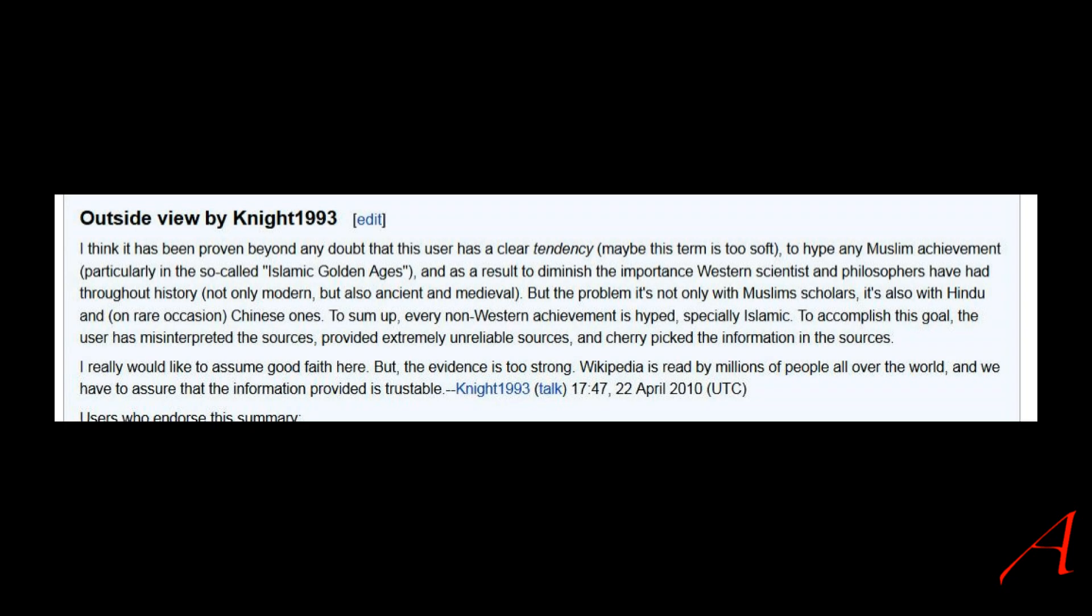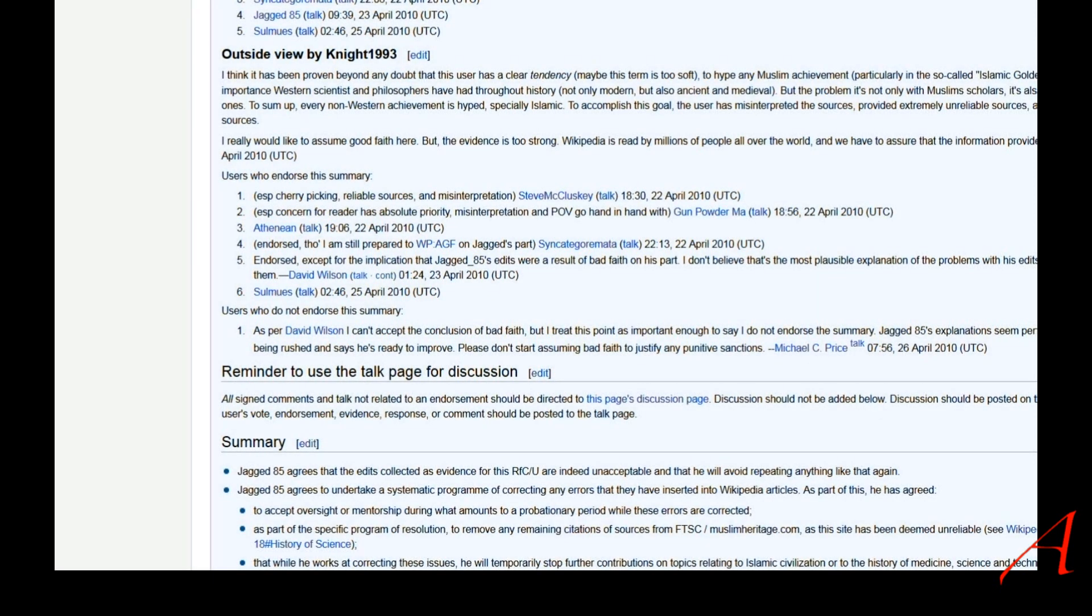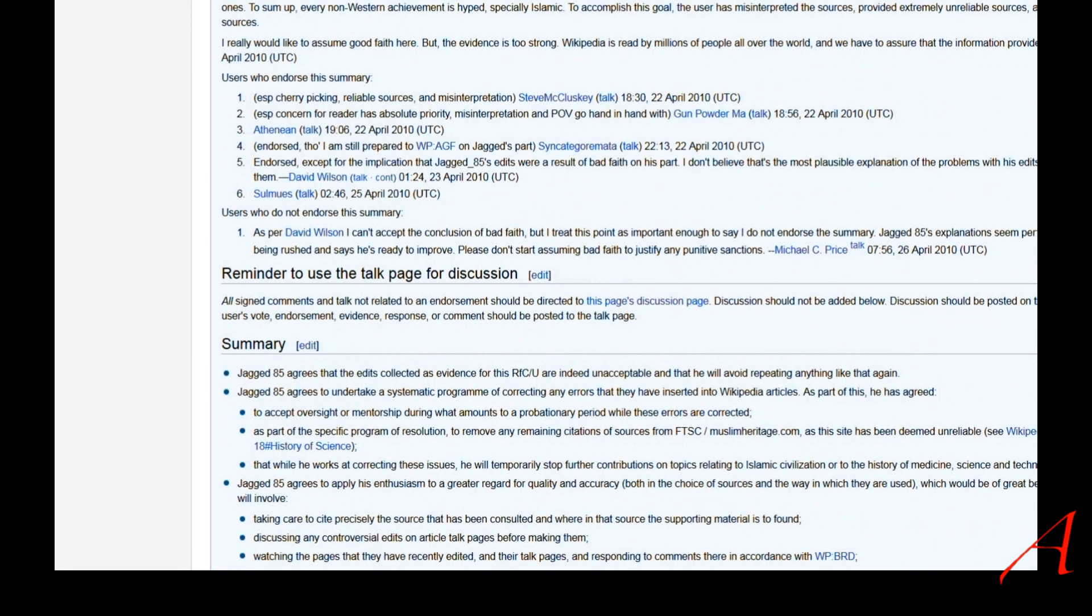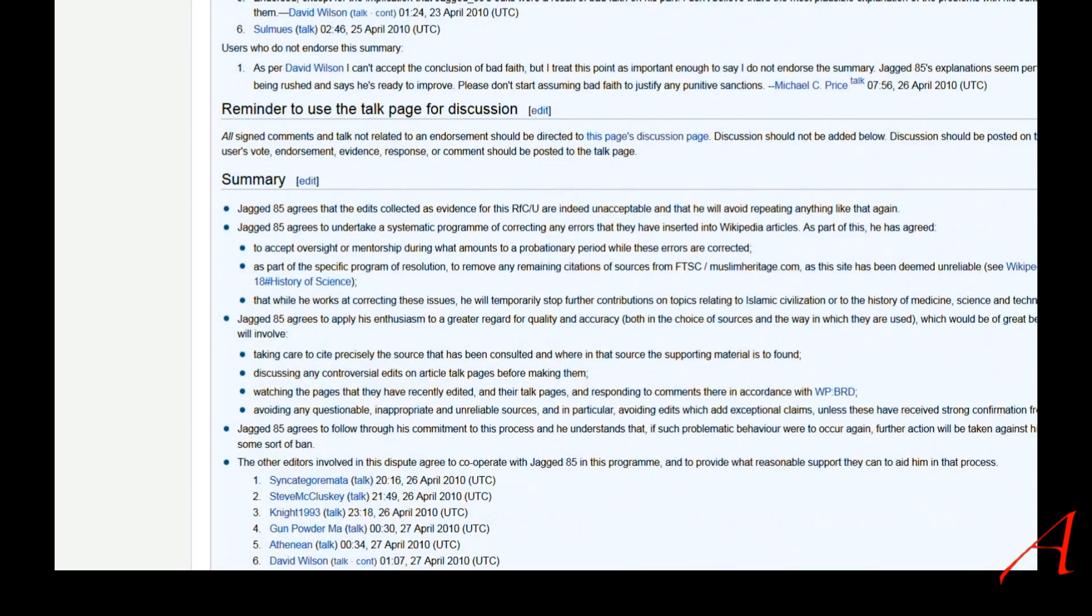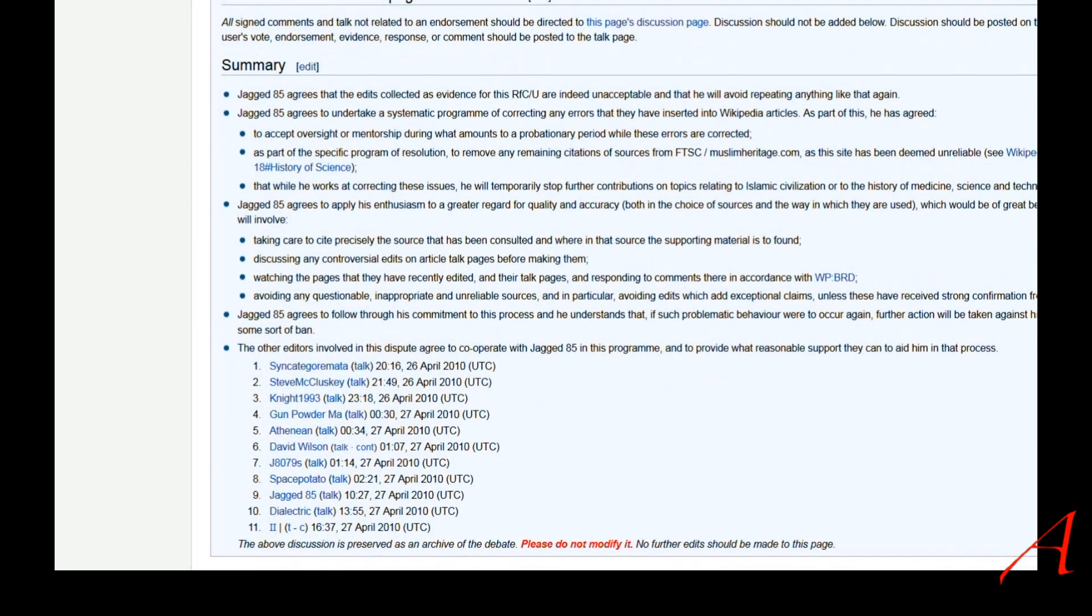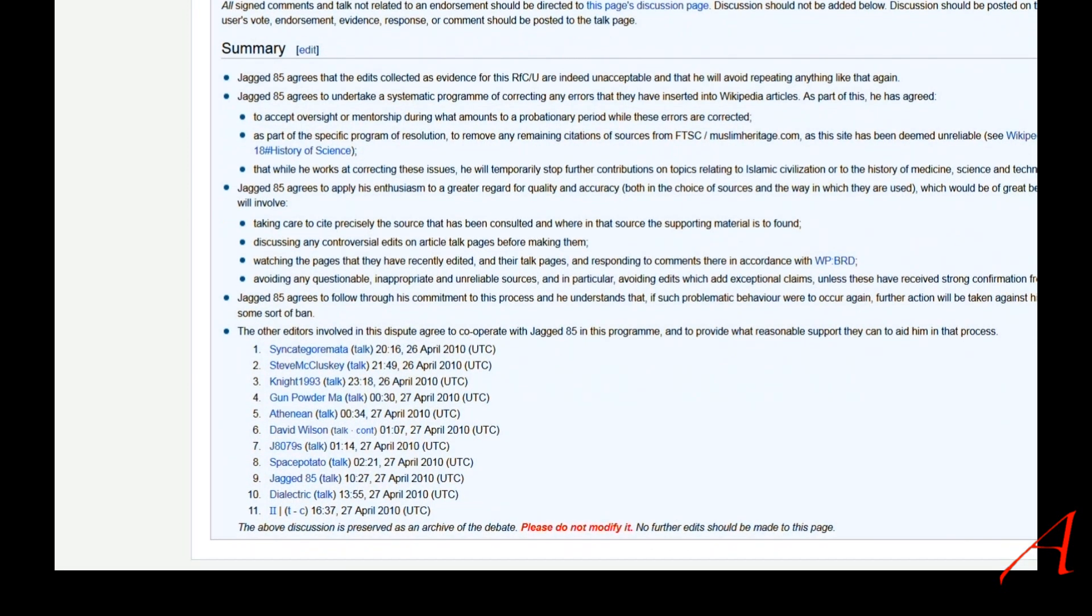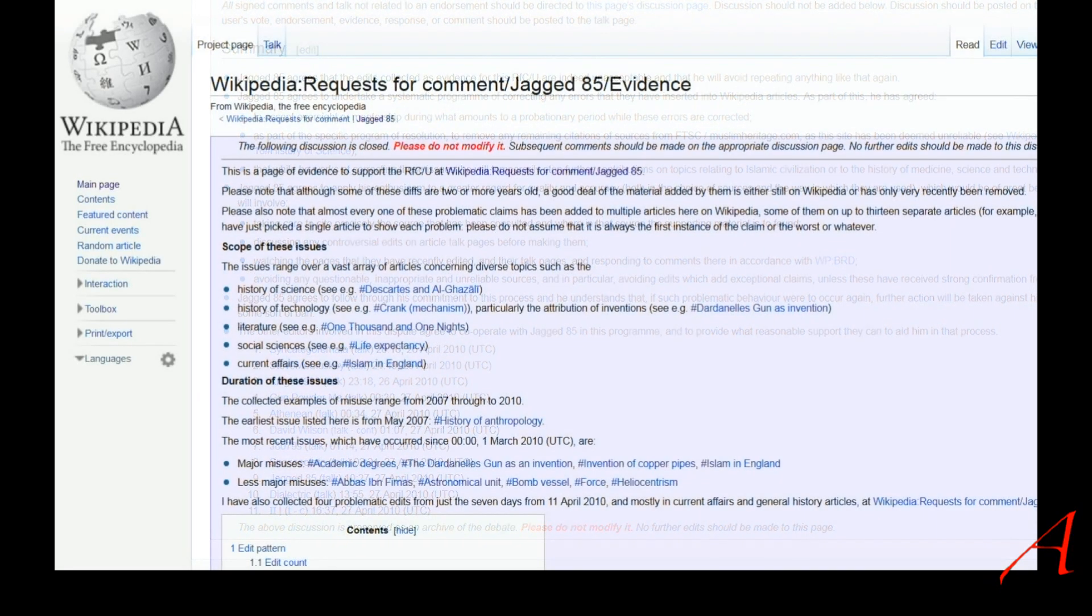One such case was exposed on Wikipedia not so long ago. This character manipulated some 60,000 entries on Wikipedia with Islamist lies. He falsified, tricked, lied, misrepresented, fabricated propaganda which was favorable for Muslims. Here's the call for comment, and now I'll really quickly scroll down all the evidence that was collected inside of Wikipedia.